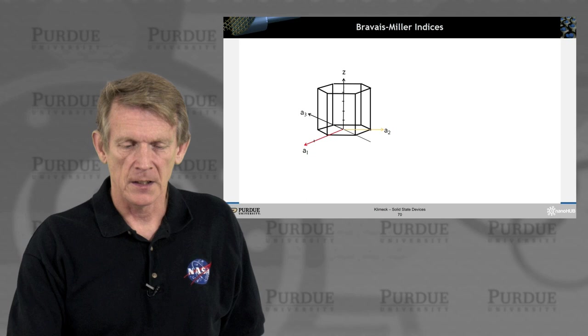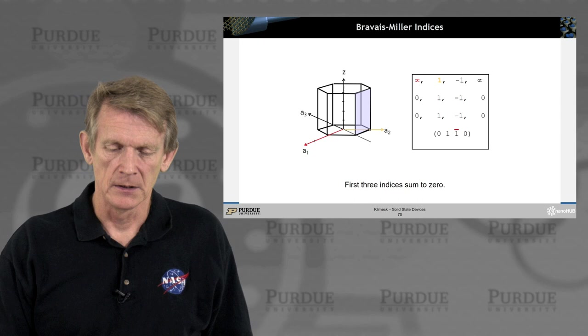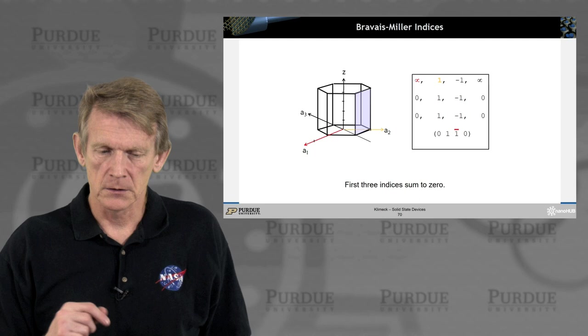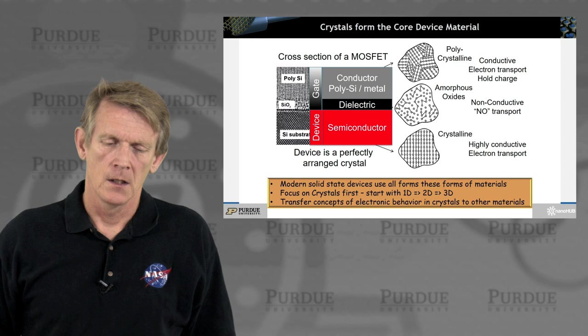There's one other caveat for hexagonal systems where you look at surfaces like this. There you have four indices. The first three indices always sum to zero. They deal with a rotational symmetry on an additional axis. We don't use these too much in this course. But you need to be aware that for hexagonal systems you might have four.